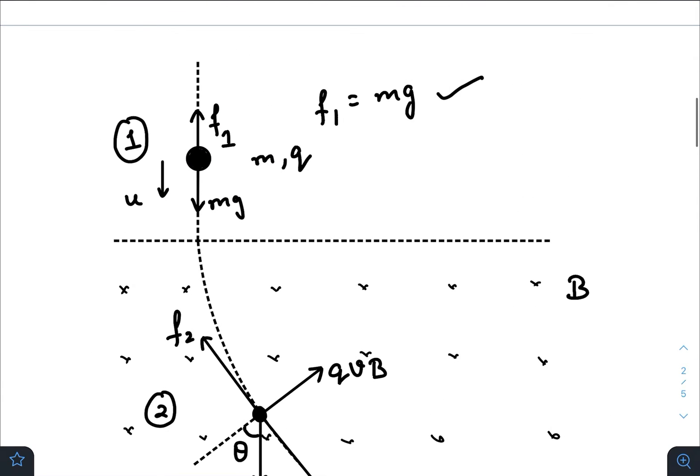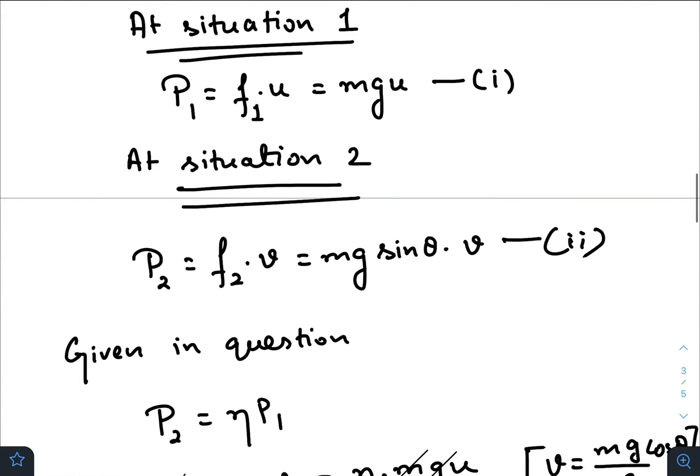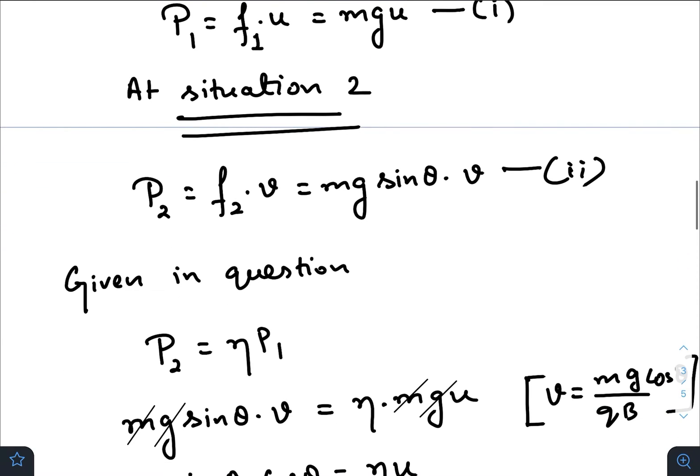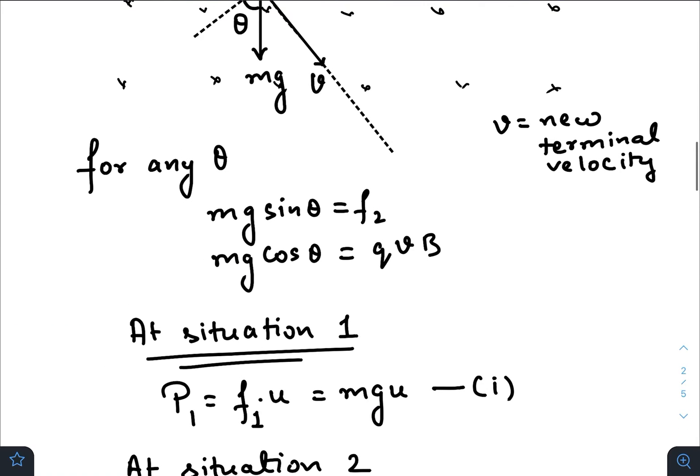And initially the resistive force was equal to mg, so f1 u equals mg u is the initial power dissipation. In the second situation the power dissipation would be f2 times v where f2 is mg sin theta.